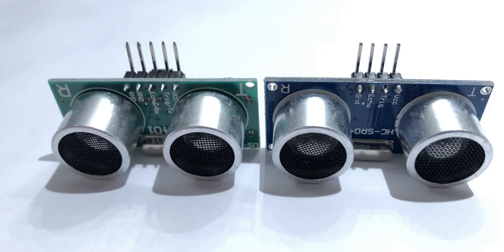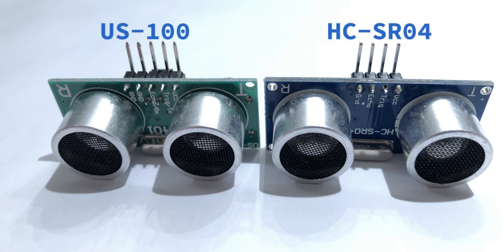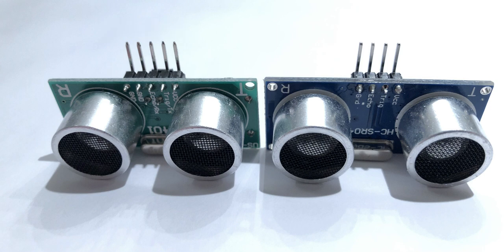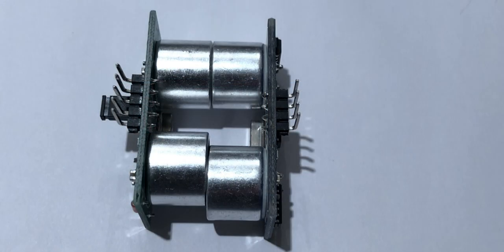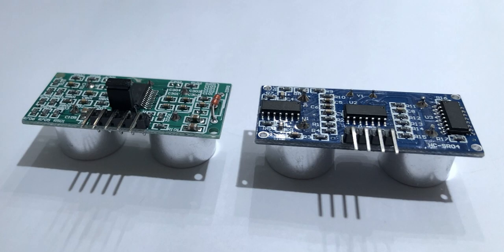If you have a look at the US100 sensor, it looks very much like the HC-SR04. As we can see from the front side, it has one additional ground pin, and also the speaker and microphone are closer together. When I turn the sensors over, we can see a few more differences.